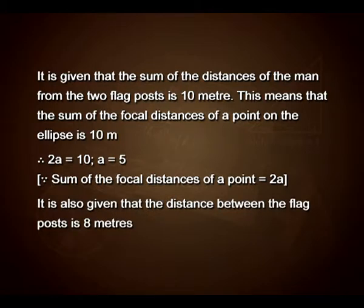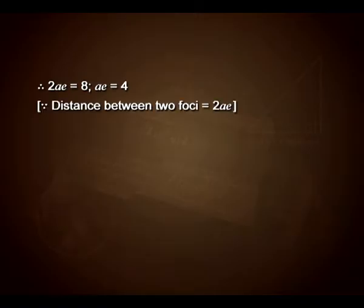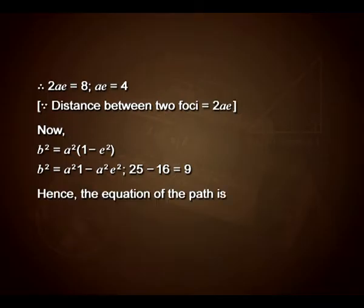It is also given that the distance between the flag posts is 8 meters. Therefore, 2ae equals 8 and ae equals 4, since the distance between two foci is 2ae. Now b² equals a² into 1 minus e², so b² equals a² minus a²e², that is 25 minus 16 equals 9. Hence the equation of the path is x² upon 25 plus y² upon 9 equals 1.